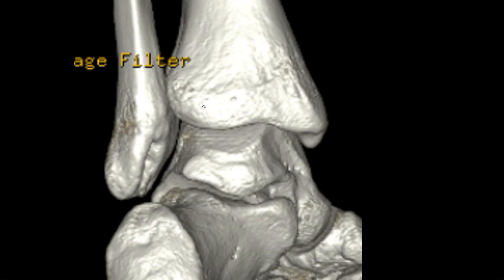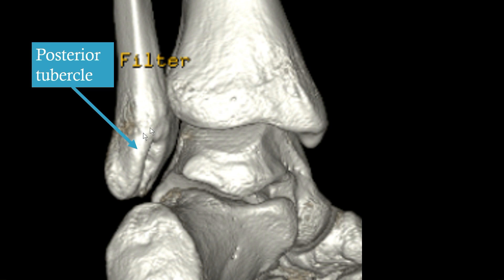In this posterior view, we have the posterior tubercle — this is Volkmann's tubercle, as already mentioned. Because this other tubercle is like no man's land with no one claiming it, if we all agree, we could start using the term 'Agnes tubercle' for it. If you're in favor of this idea, give the video a like.